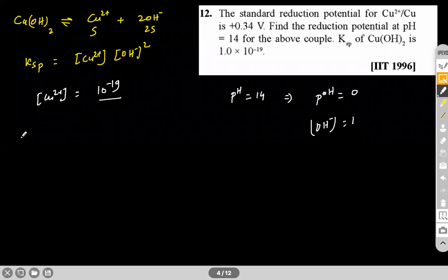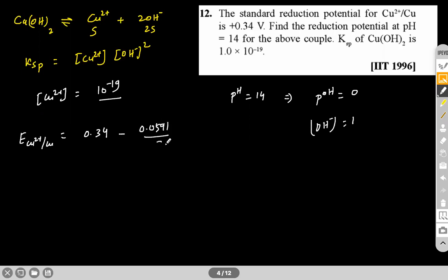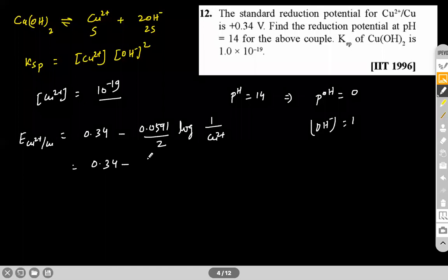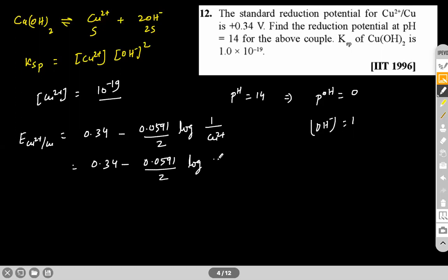Applying the Nernst equation: E(Cu²⁺/Cu) = 0.34 − (0.0591/2) × log(1/[Cu²⁺]) = 0.34 − (0.0591/2) × log(10¹⁹). When you solve this, you get approximately −0.22 V. This is the reduction potential of Cu²⁺/Cu at pH 14.